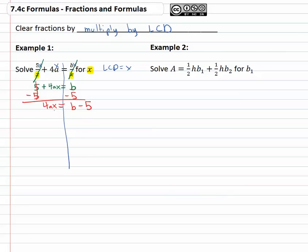Now to get the x alone, we just divide by whatever it's multiplied by. The x is multiplied by 4a, so we divide both sides by 4a to get x alone, equal to the fraction b minus 5 over 4a.